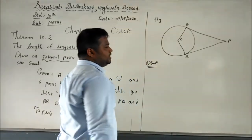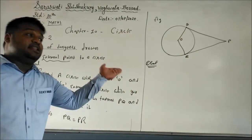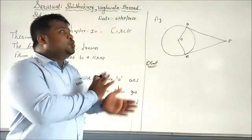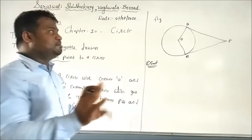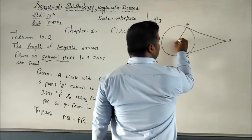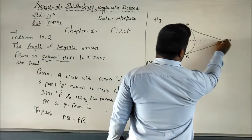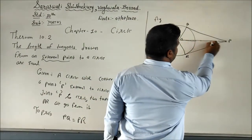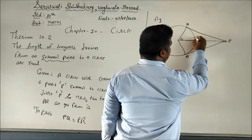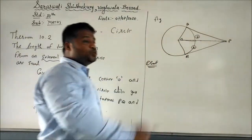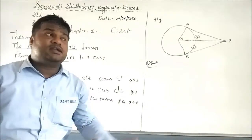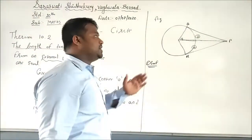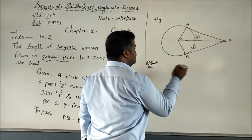Theorem 10.2 is actually easier than Theorem 10.1. When you draw the figure, you get two triangles — triangle OQP and triangle ORP. We are going to prove these two triangles congruent, and from that we can easily prove the theorem.